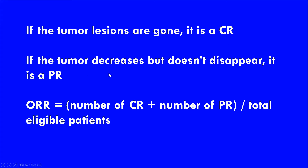If the tumor shrinks but doesn't completely disappear, that's a partial response. To get the ORR, or objective response rate, you take the number of complete responses, add it to the number of partial responses, and then divide that by the total eligible patients. Those are just basic concepts in cancer clinical studies.